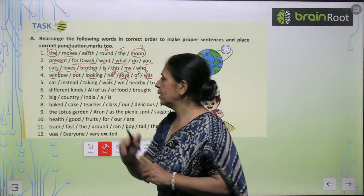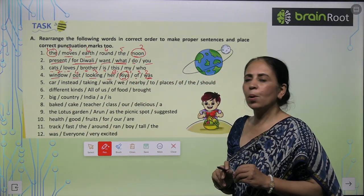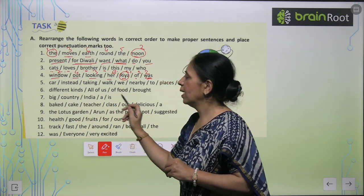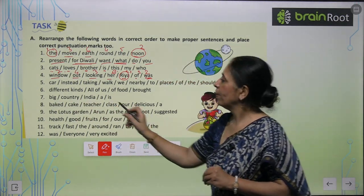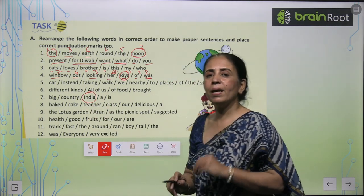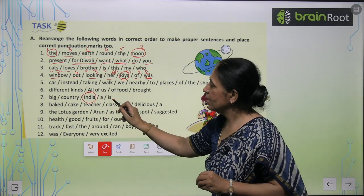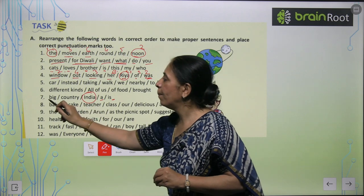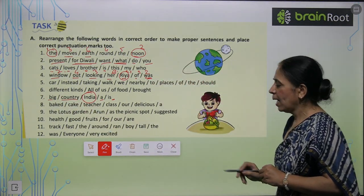Let's take the next sentence. 'Big country India is a right' — we start with India. India is a big country. Got it?